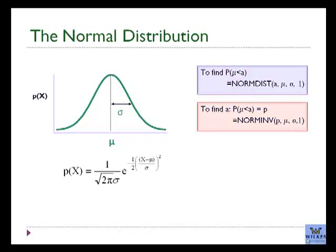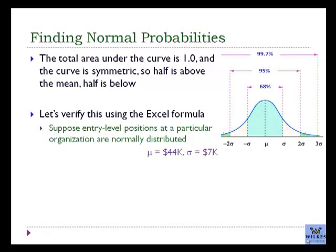There are two different formulas that Excel uses to calculate normal probabilities and values from the normal distribution. Let's do some examples. Suppose entry-level positions at a particular firm are normally distributed with a mean of 44,000 and a standard deviation of 7,000.